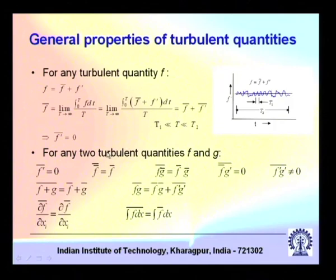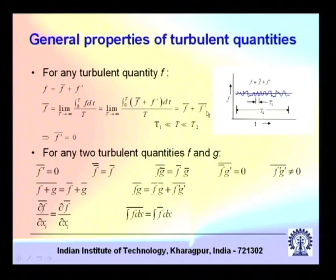We defined the average in a particular way. For example, the time average of f, that is f-bar, is defined as the limit as T tends to infinity of the integral of f dt divided by capital T, where capital T is the time interval over which the average is taken. Capital T should be much greater than the turbulent fluctuation scale T1, but much smaller than the system characteristic scale T2. Using this definition, it follows that the average of f-prime equals zero — any turbulent fluctuation quantity will have a zero average.